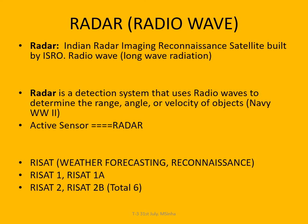RADAR is known as a spy satellite, proposed by ISRO, and also known as a recognition satellite. It records long wave radiation — that is, radio waves. RISAT is very useful for weather forecasting, cyclone and super cyclone monitoring. After the 2008 Mumbai attack, RADAR has been used for different security purposes, both for military and civilian applications.